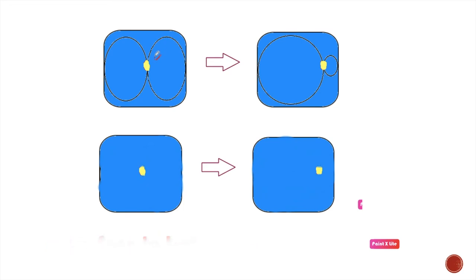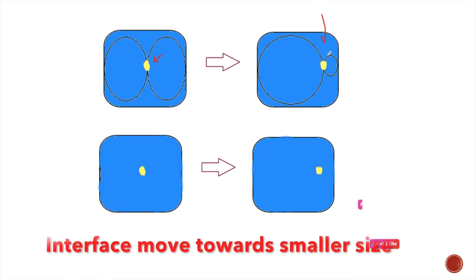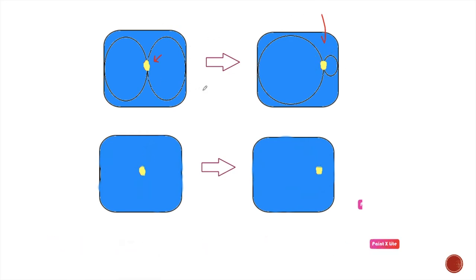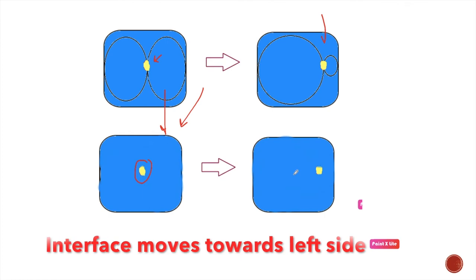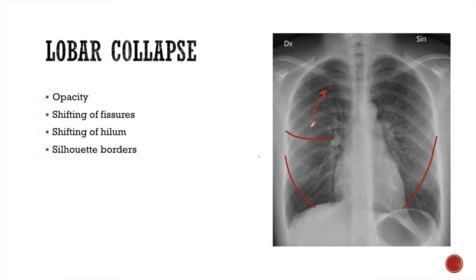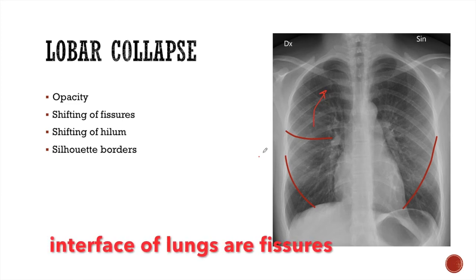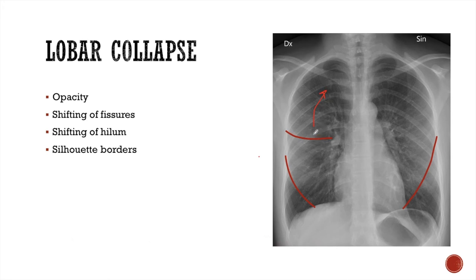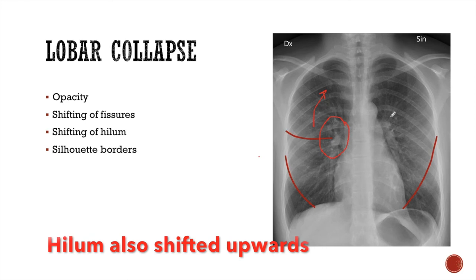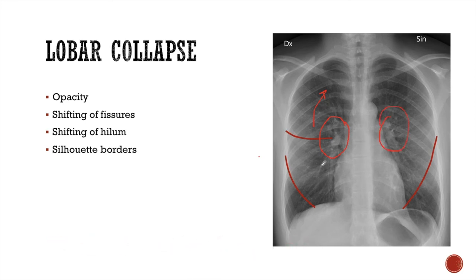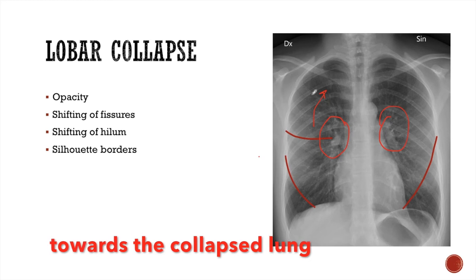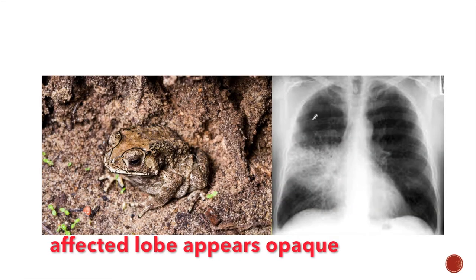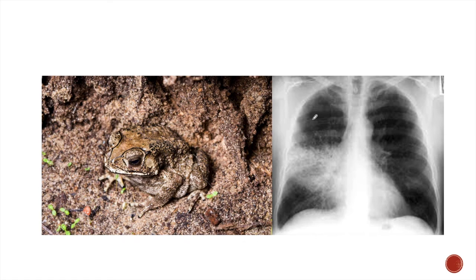Focus on the interface between the balloons. When the size of the balloon decreases, the interface moves towards the smaller side. If you focus only on the interface, you can see that with collapse of the left-sided balloon, the interface moves towards the left side. Imagine the lobes of the lungs as balloons — when one lobe is collapsed, the interface of the lungs, which are the fissures, shifts towards the collapsed lobe. With shifting of the fissures, the hilum also shifts upwards or downwards towards the collapsed lung. With loss of aeration, the affected lobe appears opaque.